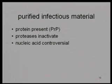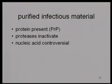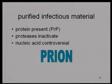When you purify the infectious material, protein is present — it's called PrP. Proteases will inactivate it. Nucleic acid treatments that would inactivate nucleic acids don't inactivate these agents, so a large body of opinion favors the idea that there is no nucleic acid — no genome. How are these things infectious then? That's still controversial, though the evidence for protein-only is accumulating and evidence for nucleic acid is fragmenting.